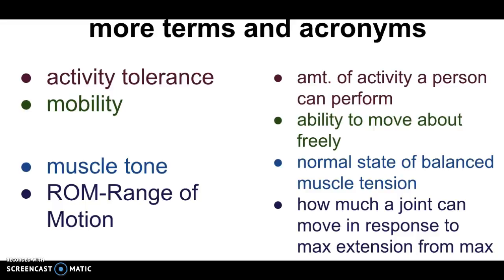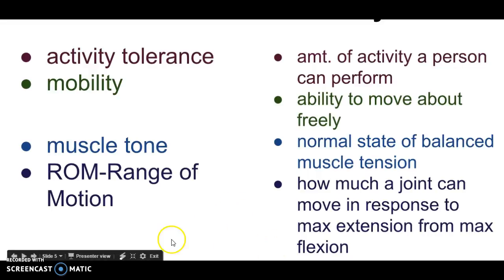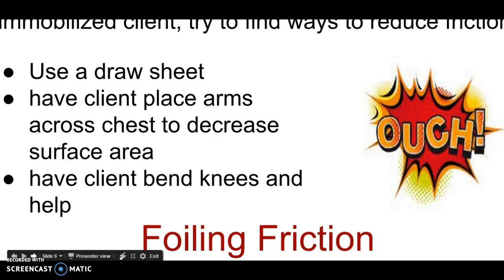Range of motion, often abbreviated ROM, is how much a joint can move in response to maximum extension from maximum flexion. If someone has various types of arthritis, they might have a limited range of motion in their joint. I had a lady just last week in clinical who fell and fractured her arm in numerous places and had to have surgical repair. Her right arm had a lot less range of motion than her left — she could only bend her elbow about 30 degrees and couldn't straighten it completely, whereas her left side she could bend past 90 degrees and completely straighten it. So she had limited range of motion in the previously fractured arm.